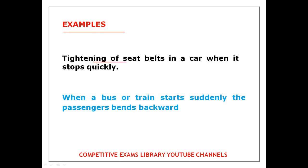First example: Tightening of seat belts when a car stops quickly. If the car stops suddenly, then the seat belt becomes tight. This is an example of Newton's first law.